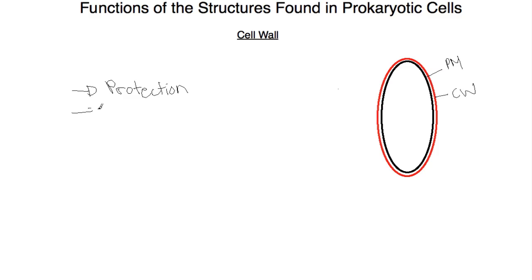Another function of the cell wall is to maintain the shape of the cell. Without the cell wall, the cell would have a really irregular shape. So it would probably look like something like this. It wouldn't be able to maintain this nice shape here.